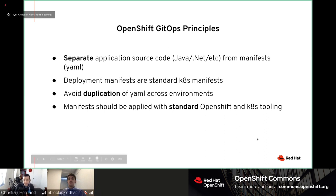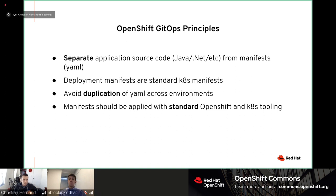Some GitOps principles — this is where we are now in terms of how to use GitOps and OpenShift. I always recommend separating application source code from your manifest YAML. In the beginning I had both in the same repo, but it's a lot better to maintain those separately so source code commits are independent from deployment commits. All your deployment manifests are standard Kubernetes manifests — they don't have to be YAML, they can also be JSON — stored in Git.